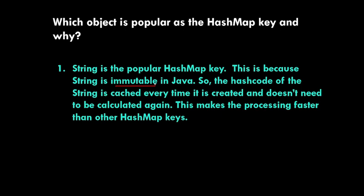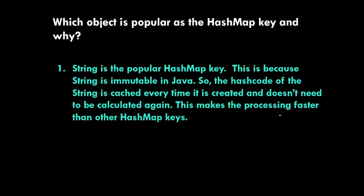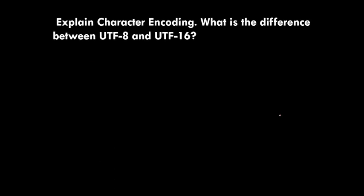Because String is immutable, the JVM does not need to recalculate the hash code each time. The hash code is stored in cache, and whenever a key lookup occurs, it is retrieved from cache. This reusability improves the performance of the system.